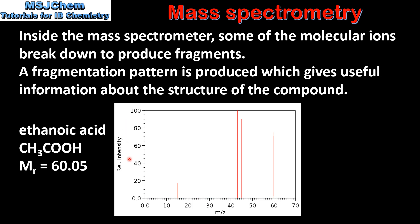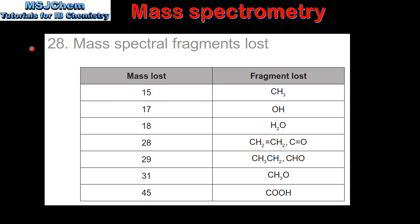Here we have a mass spectrum showing the fragmentation pattern for ethanoic acid. Each line in the spectrum represents a fragment produced when the molecular ion breaks up inside the mass spectrometer. To solve problems in mass spectrometry, you'll need to use table 28 of the data booklet, which lists the mass lost and the corresponding fragment lost. For example, if the mass lost is 15, the fragment lost is CH3, and if the mass lost is 45, the fragment lost is COOH.